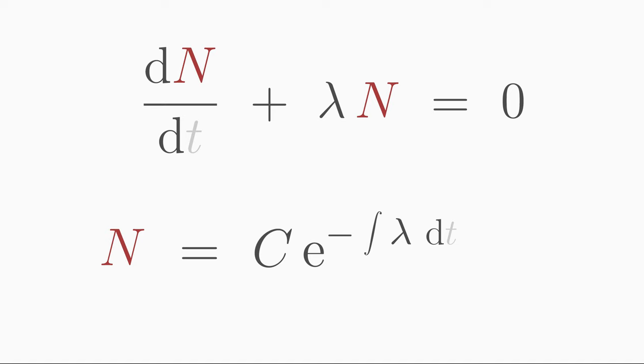According to the solution formula, you have to integrate the coefficient, that is, the decay constant lambda, over t. Integrating a constant just gives t. And we already have the general solution for the decay law.